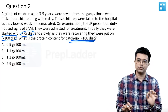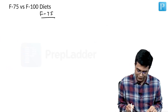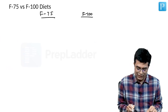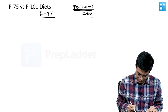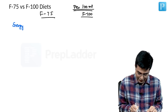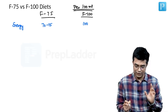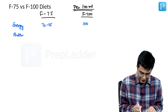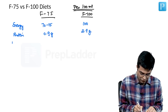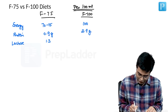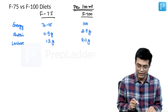Key points about F75 and F100 diet — all values are per 100 ml. Energy content: F75 has 70 to 75 kilocalories per 100 ml, and F100 has 100 kilocalories per 100 ml. Protein content: F75 has 0.9 gram per 100 ml, and F100 has 2.9 gram per 100 ml. Lactose content: F75 has 1.3 gram per 100 ml, and F100 has 4.2 grams per 100 ml.